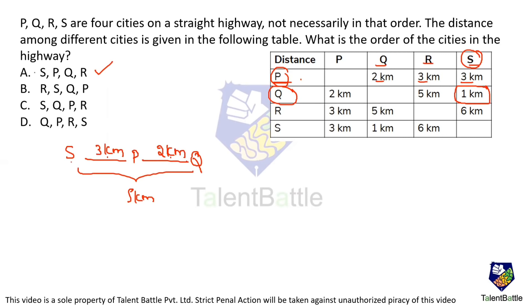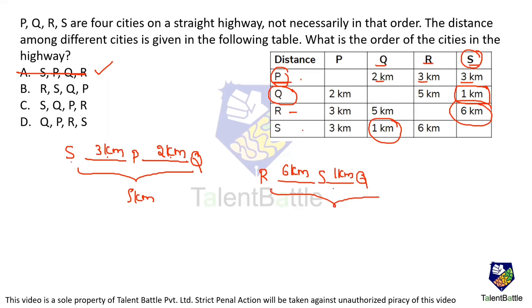So option A is definitely wrong — let's eliminate it. Now I'll check option B: first R, then S. R to S distance is 6 km. After S comes Q; Q to S distance is 1 km. Now let's check whether R to Q is satisfied. According to this arrangement it should be 7 km, but the actual R to Q distance is only 5 km. This assumption is also wrong, so let's eliminate option B.